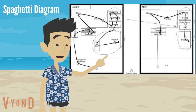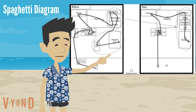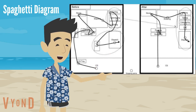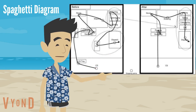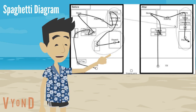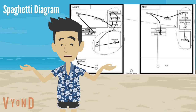Studying these two diagrams, the before version shows a lot of motion to undertake a task, while the after diagram shows the same task but with reduced motion. This has been accomplished by using a spaghetti diagram to map the motions and the real layout of the workstations.